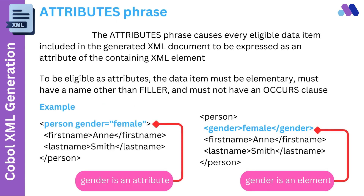The Attributes phrase causes every eligible data item in the generated XML document to be expressed as an attribute of the containing XML element. To be eligible as an attribute, the data item must be elementary, must have a name other than FILLER, and must not have an OCCURS clause. In simple terms, a group level data item in COBOL cannot be an attribute.